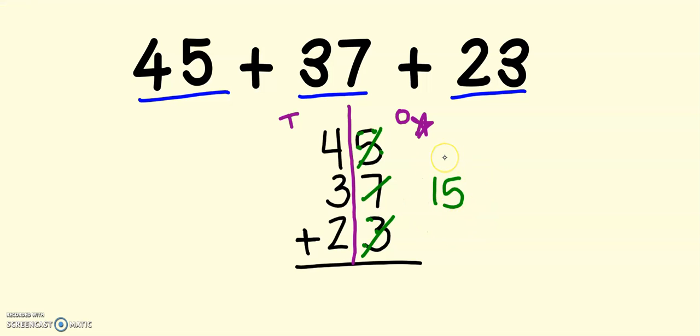Now, just like when I added 2 numbers, I asked myself, did I make a new 10? The answer is yes, I did. So that new 10, just like last time, goes up into my tens column. And I bring my 5 ones down to the bottom, just like last time. The only real difference is that I added 3 numbers instead of 2.